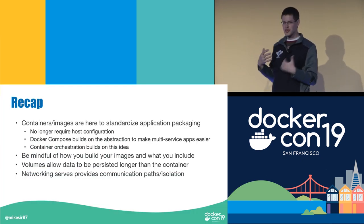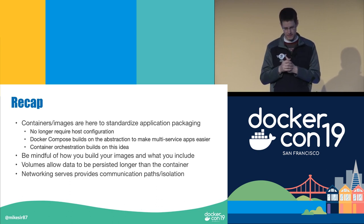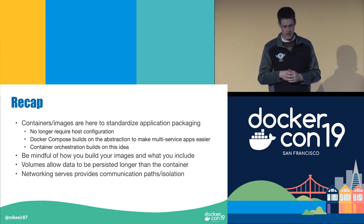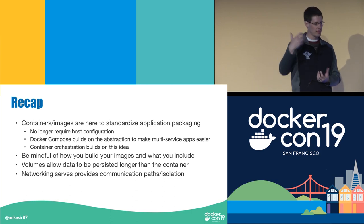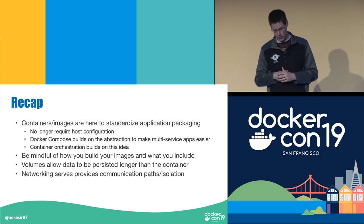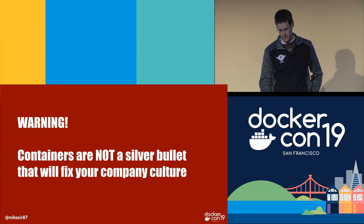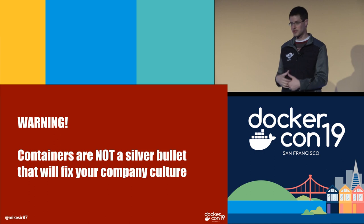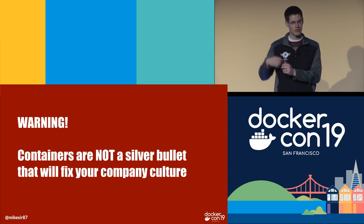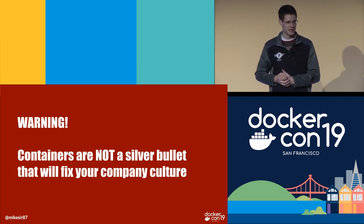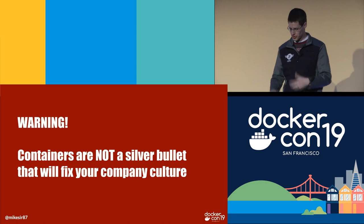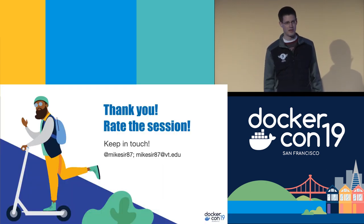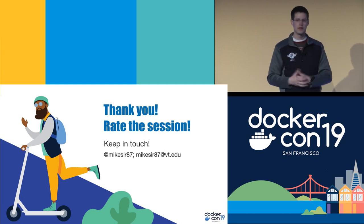To recap: containers and images are just the standard way to package up an application. I no longer need to do a lot of host config — just install the engine. Docker Compose and orchestration are tools that build upon this standardization. We need to be mindful of how we build our images, and volumes allow us to persist our data. One final point: containers are not a silver bullet to change your company culture. Going back to the Industrial Revolution — that happened because people wanted to make goods faster. If you're struggling with being agile and responding to user feedback, containers aren't going to fix that. There's a whole cultural adoption that has to occur, and that's honestly the hardest part. Work on your culture, work on the ability to move quickly. With that, I thank you — I encourage you to rate the session and give me feedback.